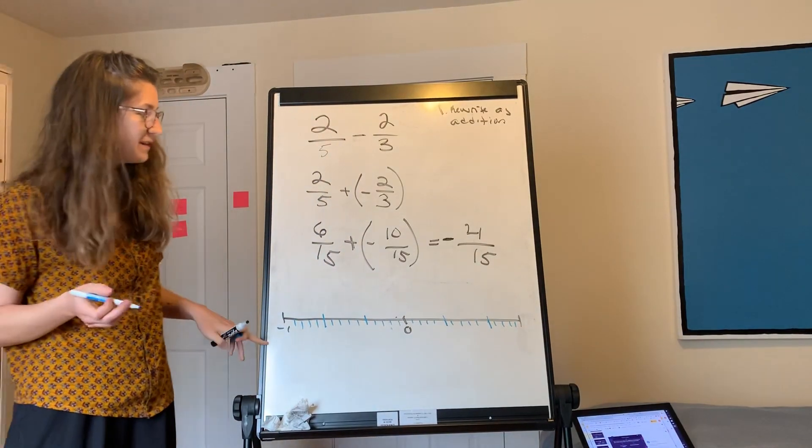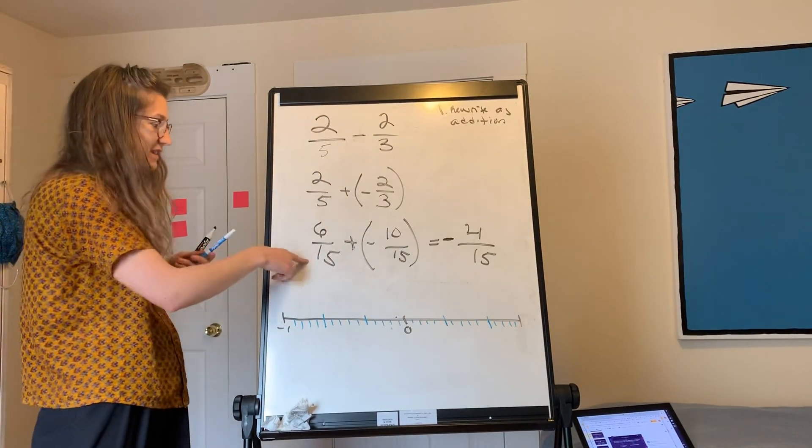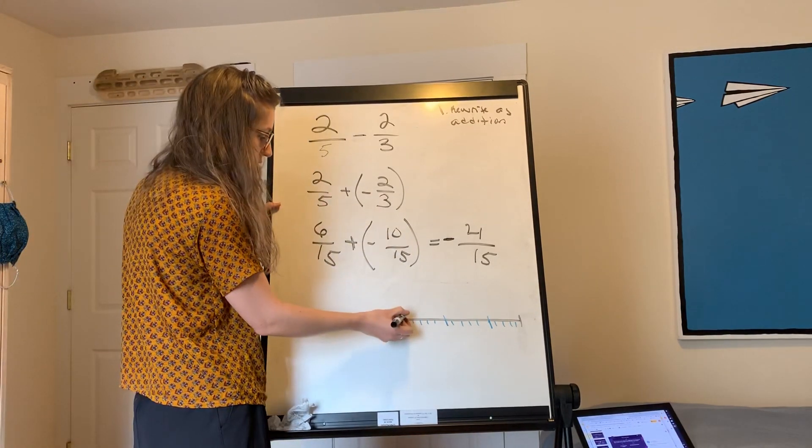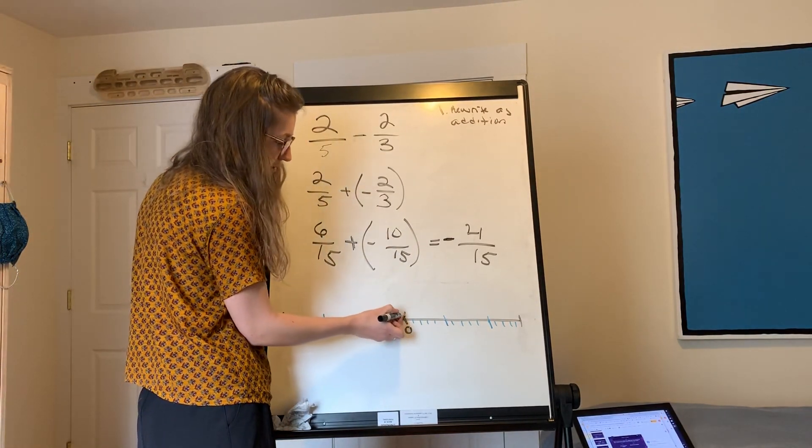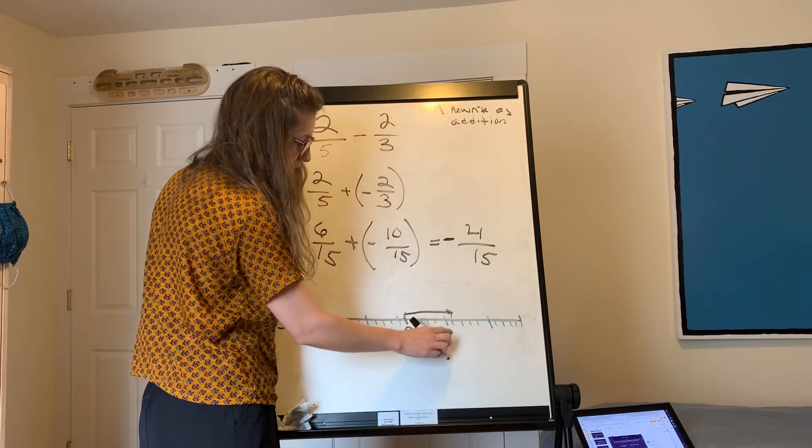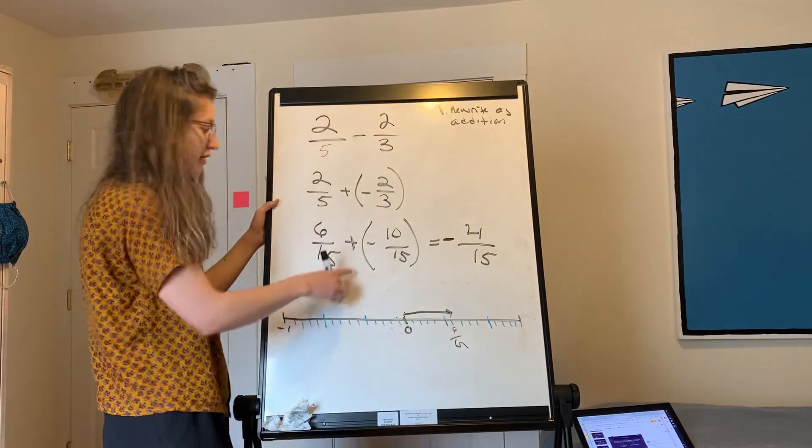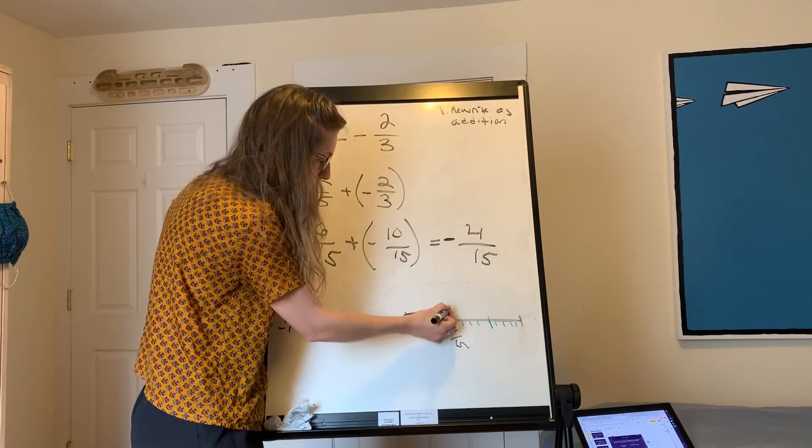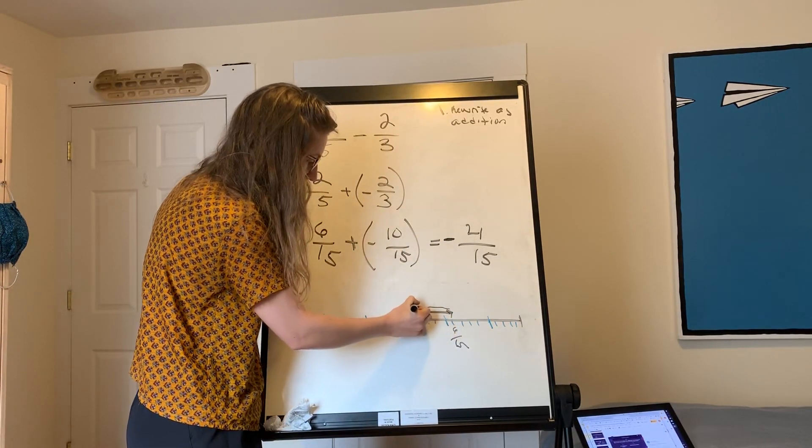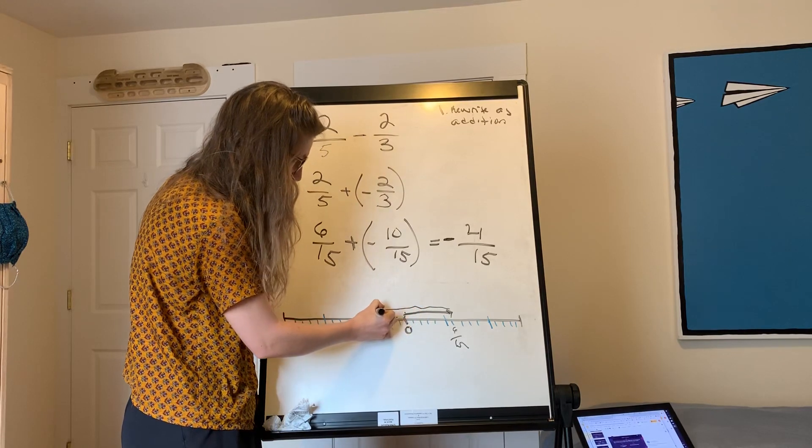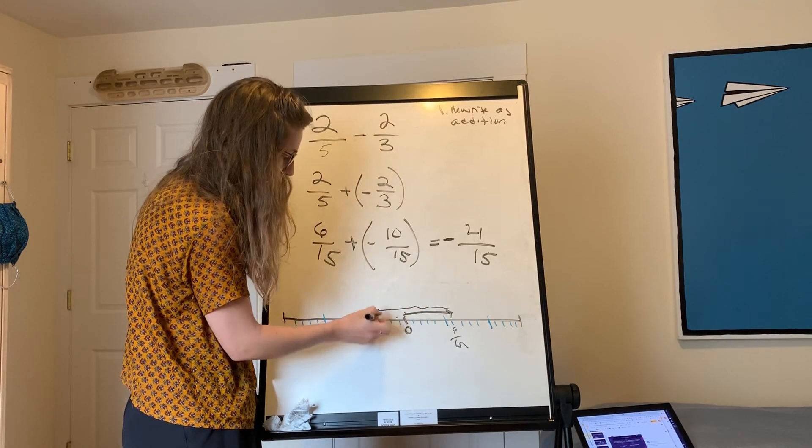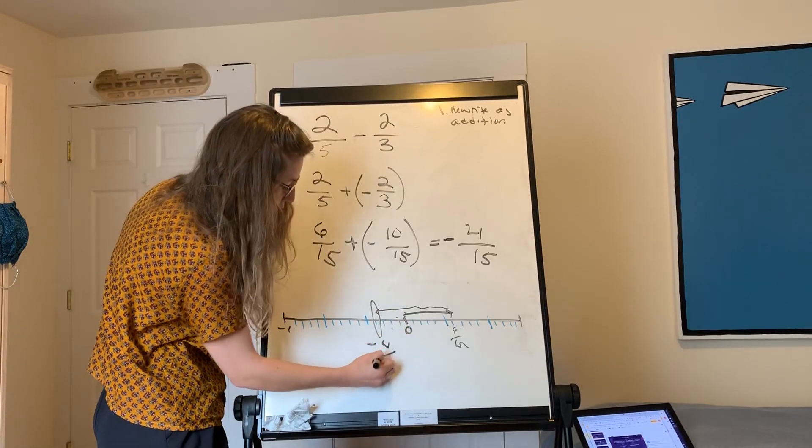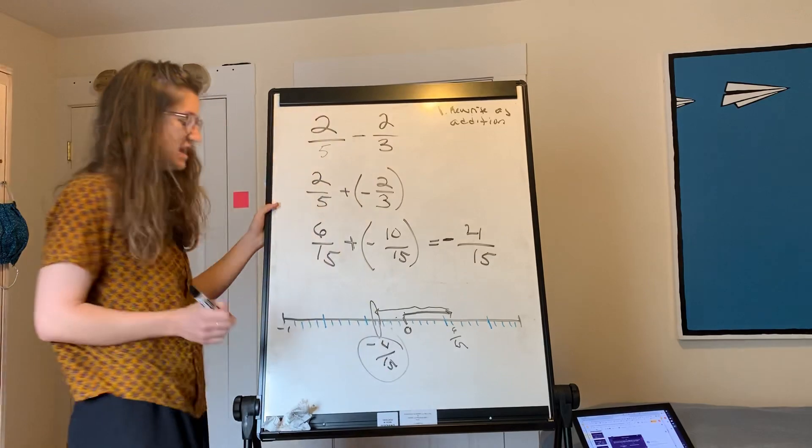Okay. Now let's split up into fifteenths. So how do we add six-fifteenths plus negative ten-fifteenths? Like always, we start at zero. And we go to six-fifteenths, which is here. This is six-fifteenths. Then we go to the left ten-fifteenths. One, two, three, four, five, six, seven, eight, nine, ten. I hope I did that right. We end up here, which is one, two, three, four. Yes, it is negative four-fifteenths.